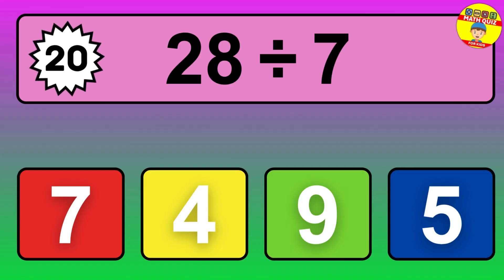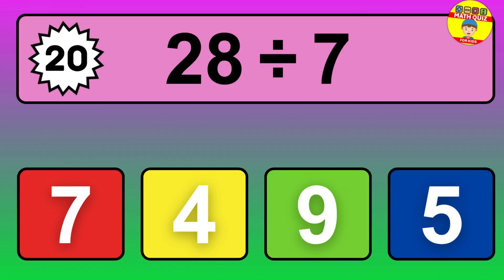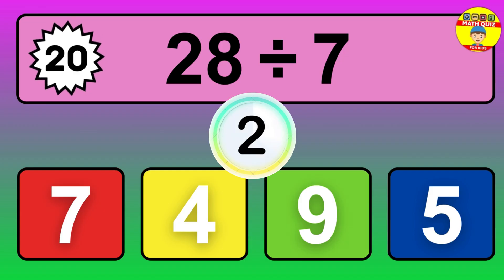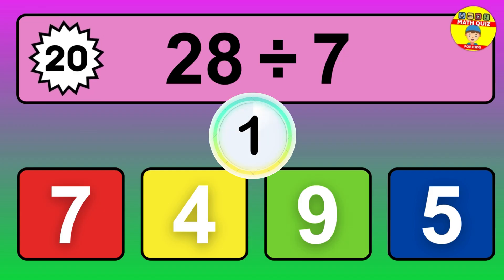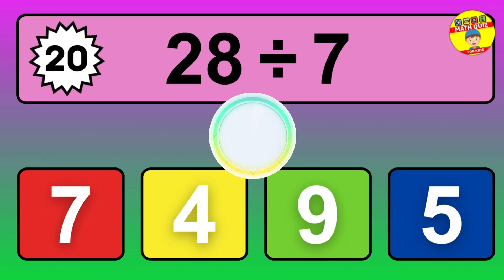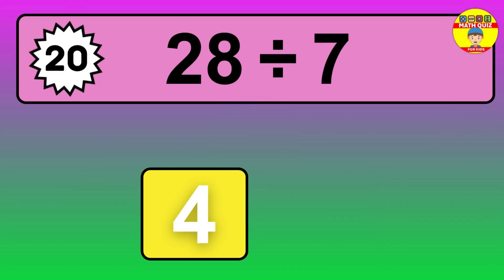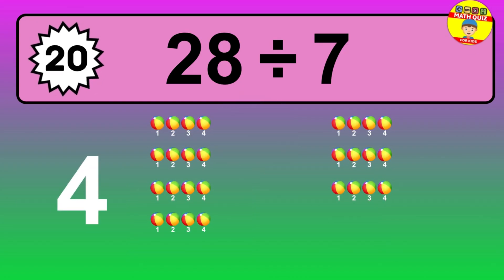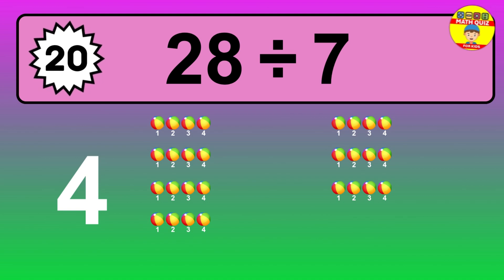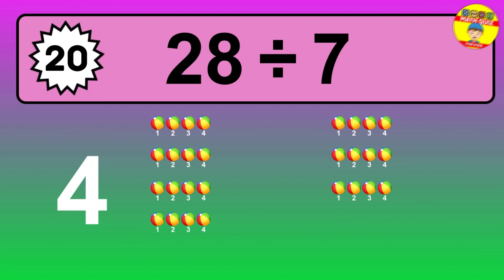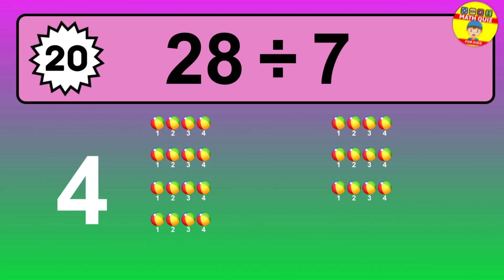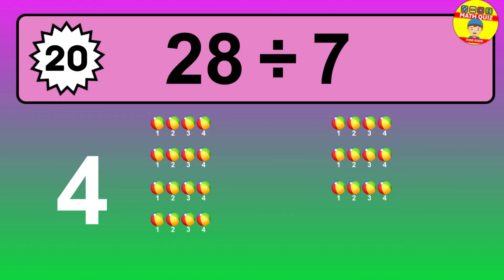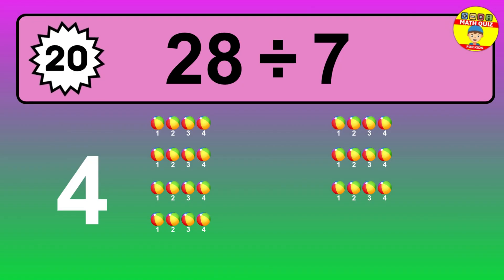28 divided by 7 — time to think. Let's go to the solution. Divide the number 28 by 7. Each group contains 7 units, so dividing 28 by 7 results in 4 equal groups. Thus, the result is 28 divided by 7 equals 4.